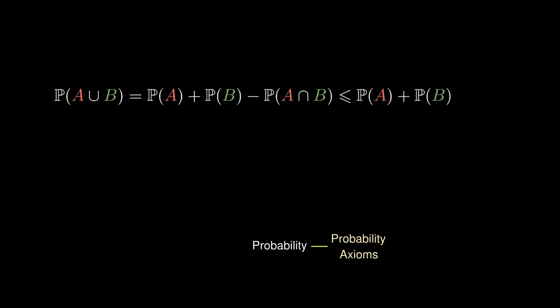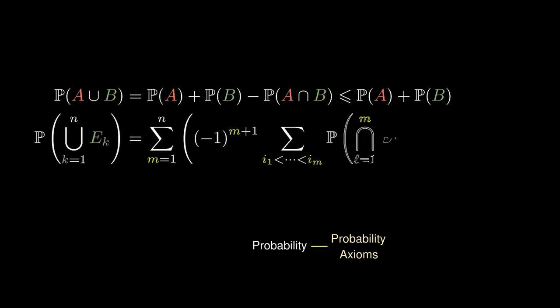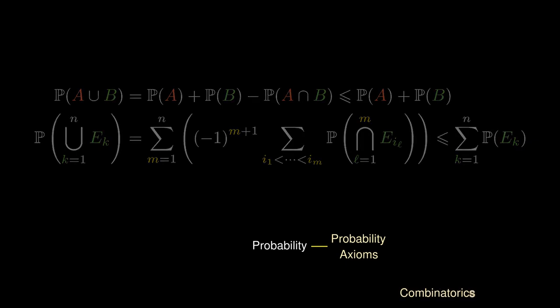We can derive a similar formula for n different events, which is rather complicated, but will also satisfy the union bound — the sum of the probabilities. A key instance of probability can be defined using combinatorics.